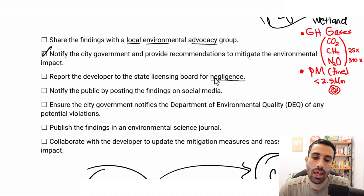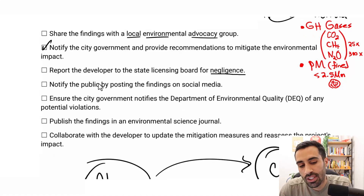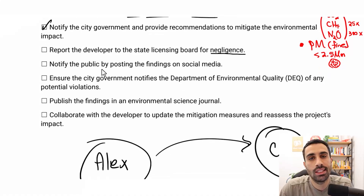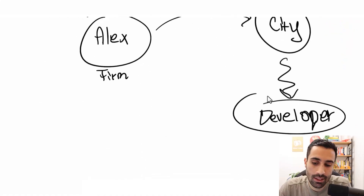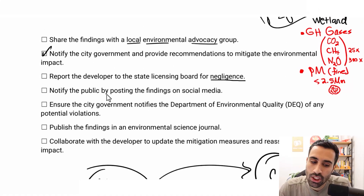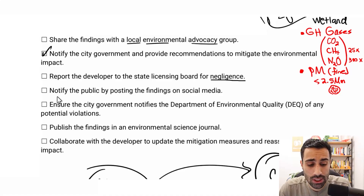Option D: Notify the public by posting findings on social media. This is the same issue as option A — confidential information exists between three parties: Alex, the city, and the developer. Posting on social media is definitely not appropriate here.